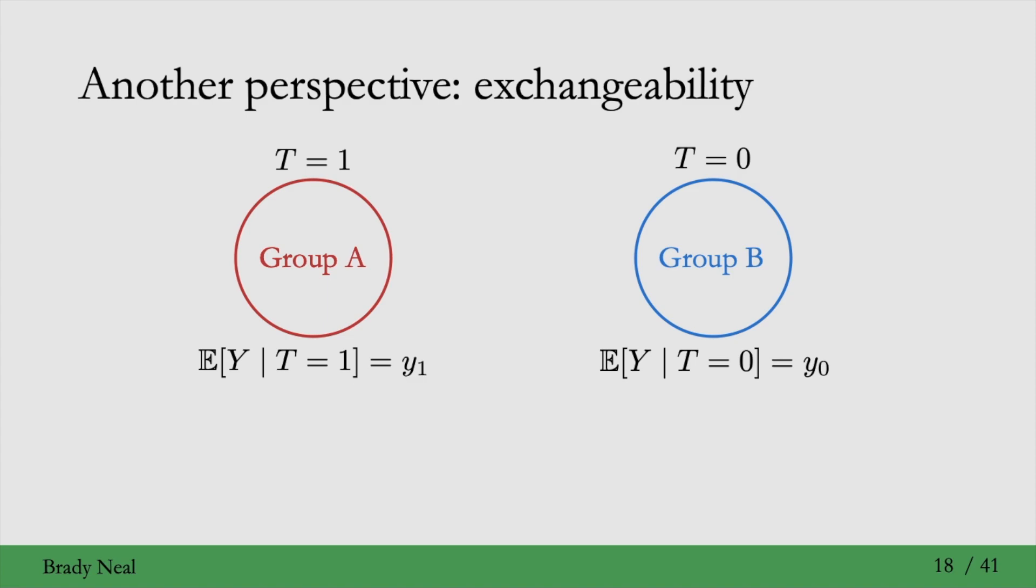Exchangeability means that if we were to swap A and B, so now that B is given treatment and group A is given control, the expected values would remain the same. So, the expected value of y given that I assigned treatment equals 1 to group B is the same as if I had assigned it to group A. And similarly, for group A, now that it is receiving control, it can have the same expected value of y as if B were receiving control.